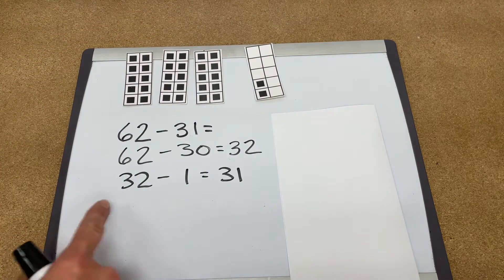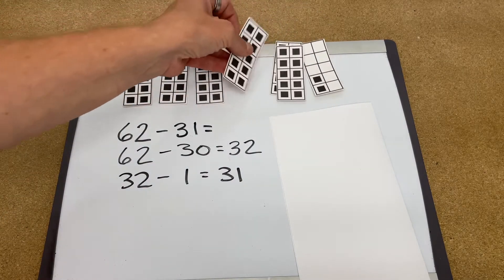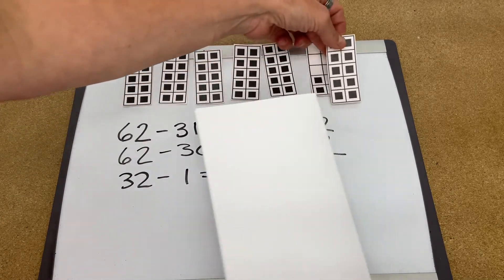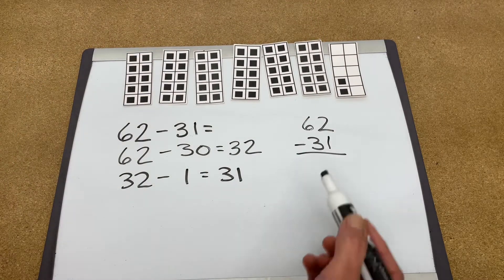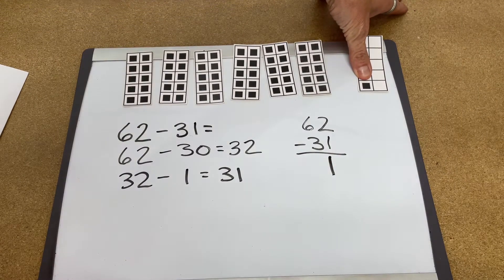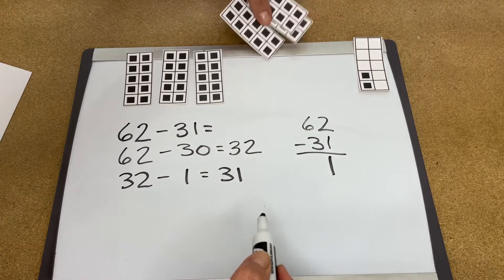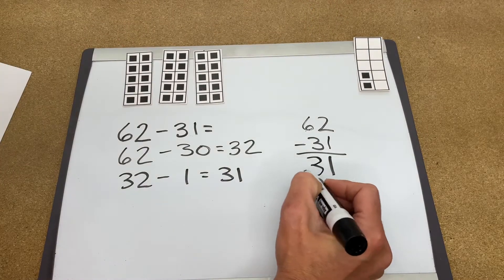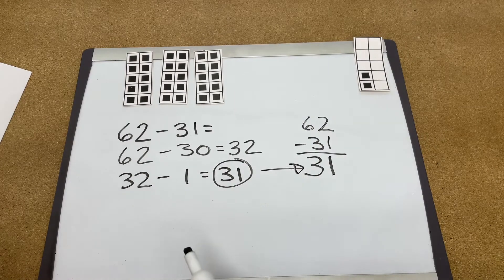If we're going to write this same question in the algorithm vertical, we can look at it like this. So 62 take away 31. 2 take away 1 leaves us with 1 here. And 60 take away 30 leaves us with 30 left. And you see 31 here and 31 there, it's the same answer.